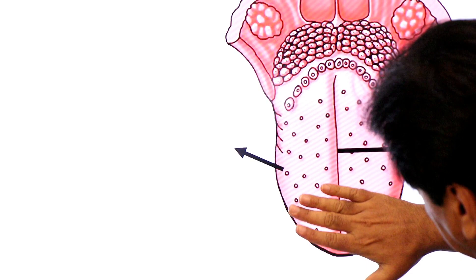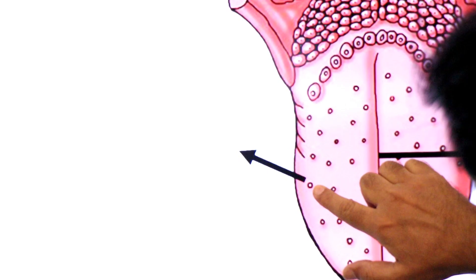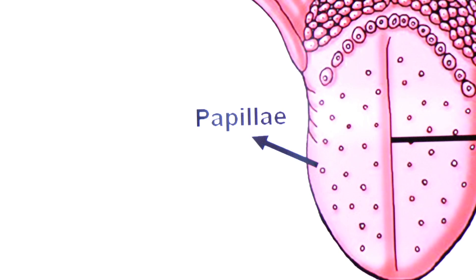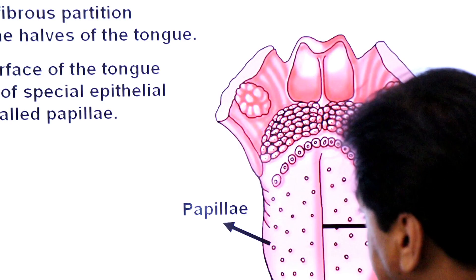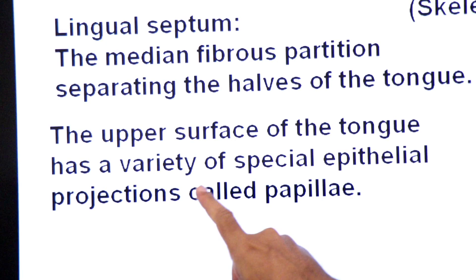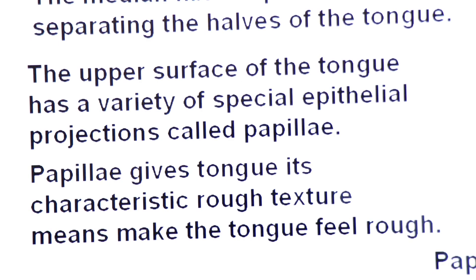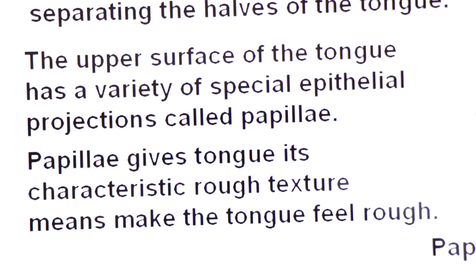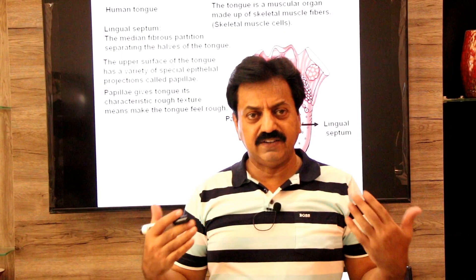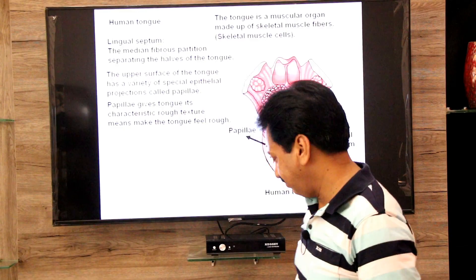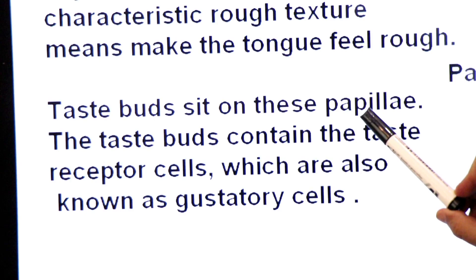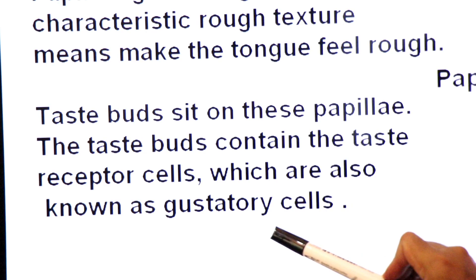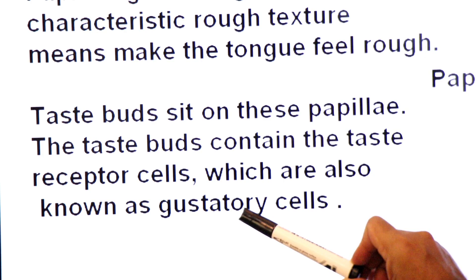The tongue is covered in epithelium, and dear students, there are epithelial projections on its surface. These epithelial projections are known as papillae, also called lingual papillae. The upper surface of the tongue has a variety of special epithelial projections called papillae. These papillae give the tongue its characteristic rough texture. Taste buds are found on top of these papillae, and the taste buds contain taste receptor cells also known as gustatory cells.